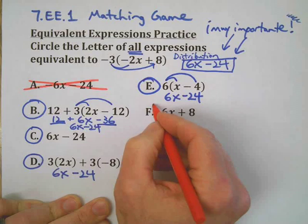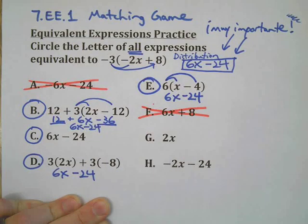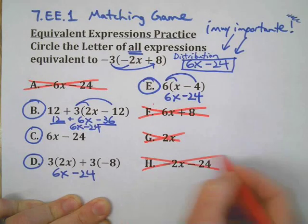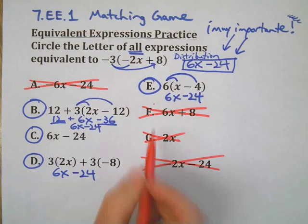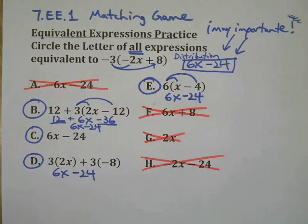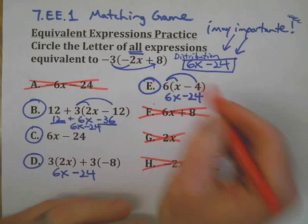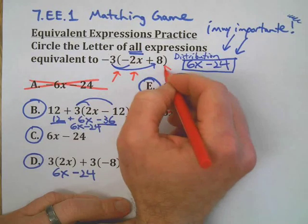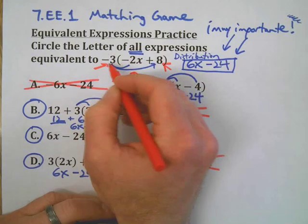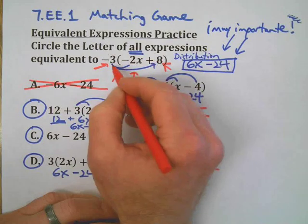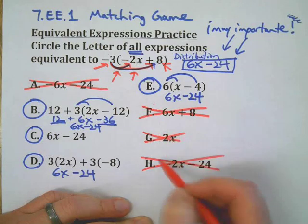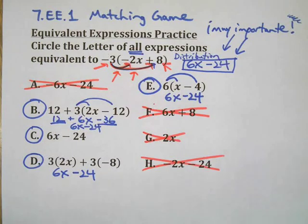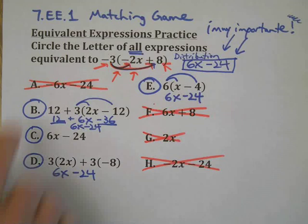F doesn't match, G doesn't match, H doesn't match. You might think those are silly answers — of course they don't match — but it all comes back to here: if you did not distribute the negative 3 correctly to both terms inside the parentheses, those wrong answers could lead you astray. Based on that mistake, you may have chosen F, G, or H.